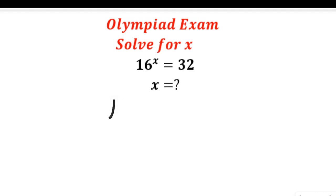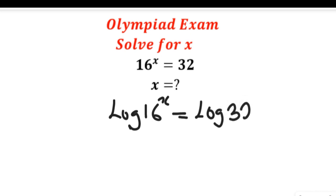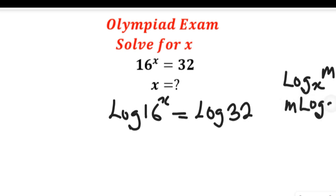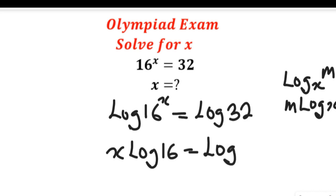Let's take the log of both sides. We'll have log of 16^x equal to log of 32. Remember, according to the law of logarithms, if you have log of m^x, this gives you m log x. So applying that here, we'll have x log 16 equal to log 32.